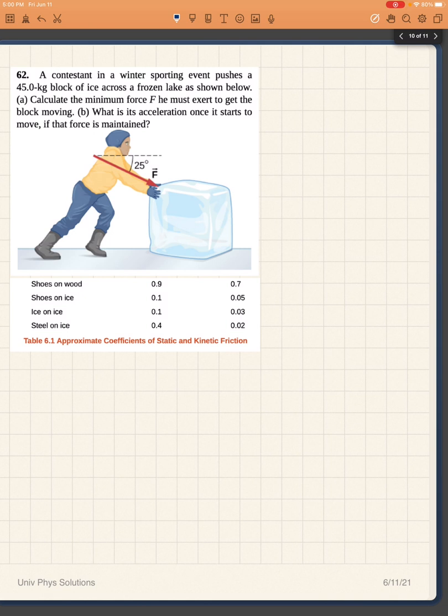friction between the block of ice and the frozen lake. If you look at table 6.1 you will see the coefficients of static and kinetic friction. You notice that the coefficients of static friction, which would be these ones, are always larger than the coefficients for kinetic friction.